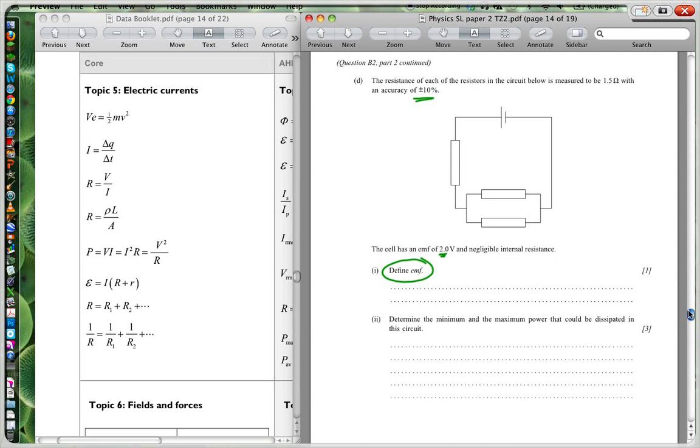That is the maximum energy per coulomb that a cell can deliver. It's the maximum energy that a cell can deliver by the source.